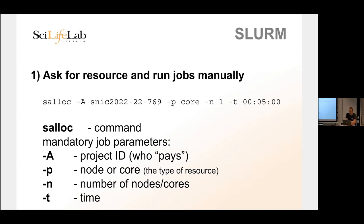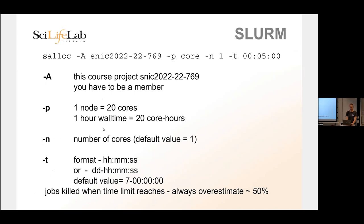We run the salloc command — the 's' stands for Slurm and 'alloc' stands for allocate. There are a couple of options: -A for account, -p for partition, -N for number, and -t for time. The -A option specifies the account — the project ID. When you get your own account, this number changes. You have to be a member of this project. This is the only option that is actually mandatory when you submit a job — you have to say who's paying for it, where should we put all the core hours.